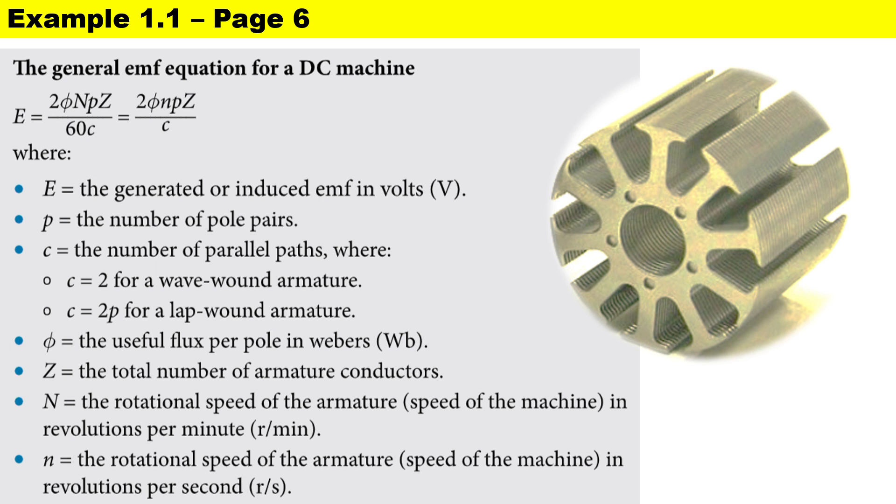The flux per pole measured in weber. Z is the total number of armature conductors. N is the speed in revolutions per minute. Just take note, some calculations give you the speed in revs per second.